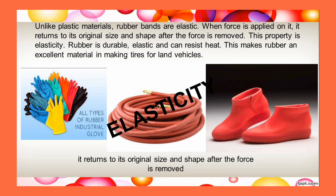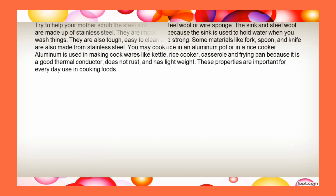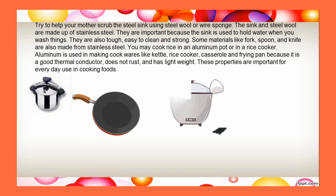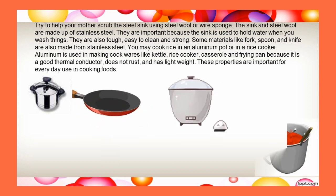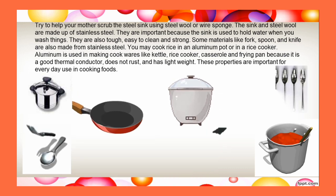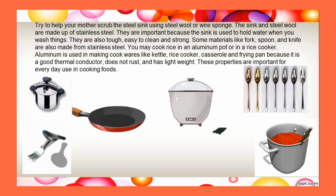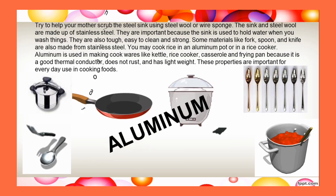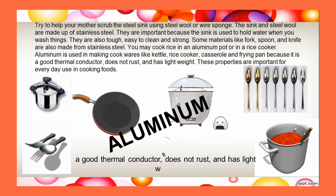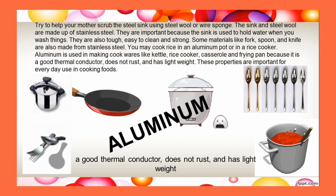It returns to its original size and shape after the force is removed. Try to help your mother scrub the steel sink using steel wool or wire sponge. The sink and steel wool are made up of stainless steel. They are important because the sink is used to hold water when you wash things. They are also tough, easy to clean, and strong. Some materials like fork, spoon, and knife are also made from stainless steel.